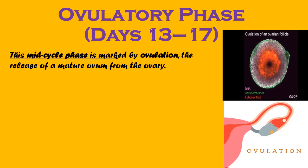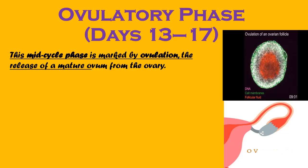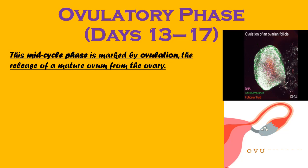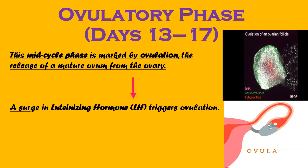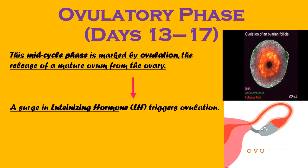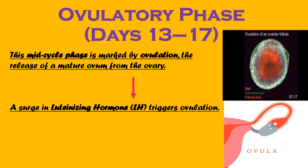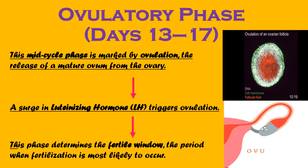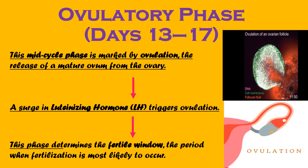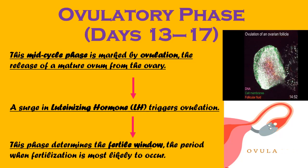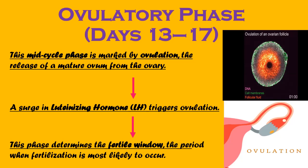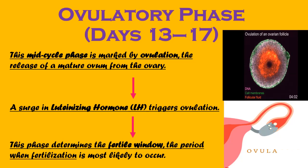Ovulatory phase, i.e., days 13 to 17: this mid-cycle phase is marked by ovulation, the release of a mature ovum from the ovary. A surge in luteinizing hormone, i.e., LH, triggers ovulation. This phase determines the fertile window, the period when fertilization is most likely to occur.